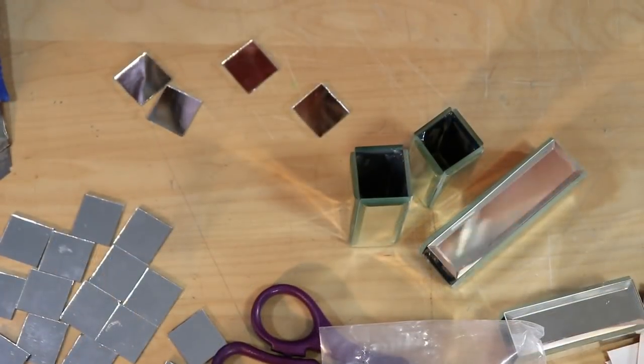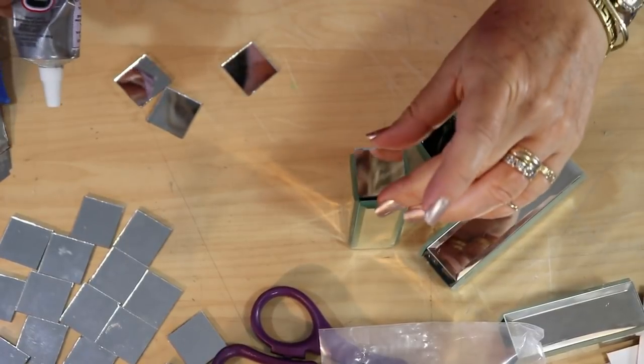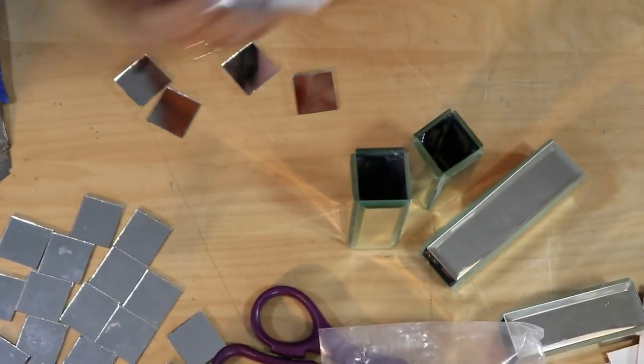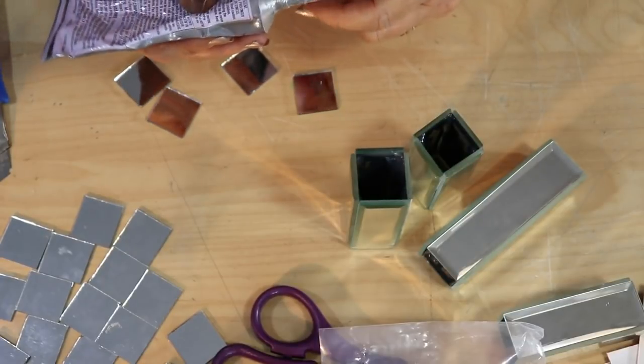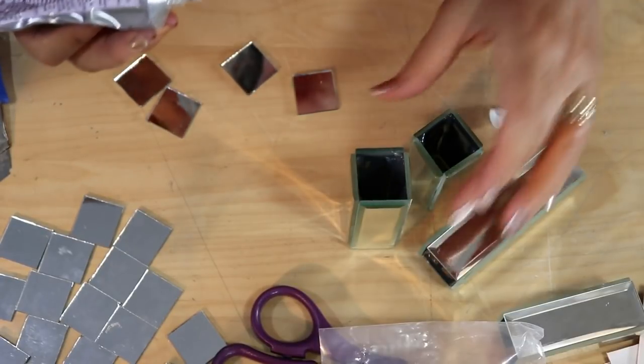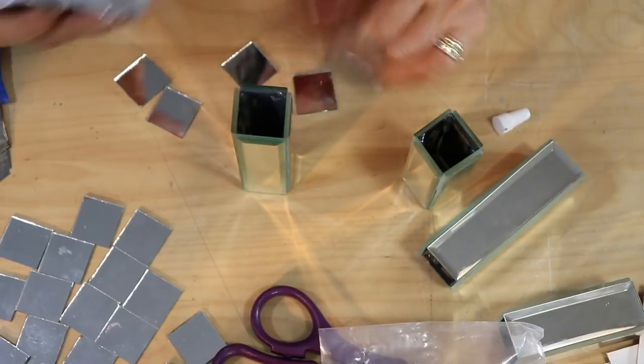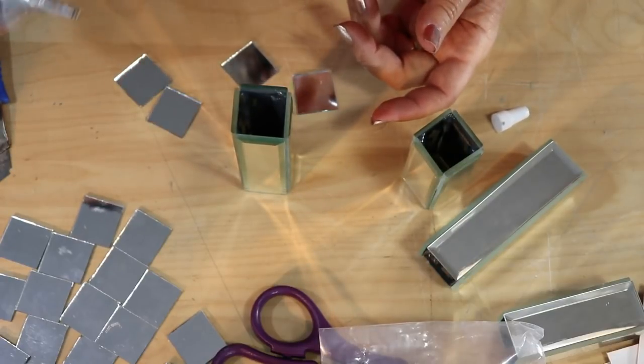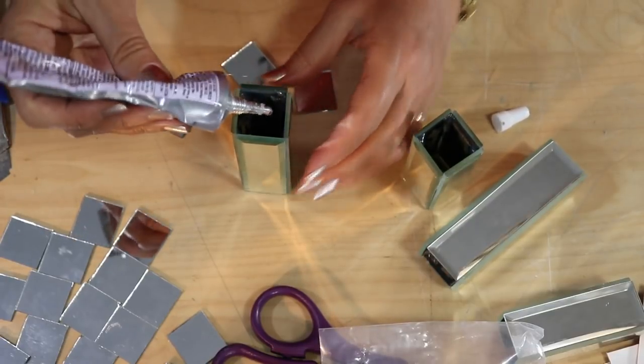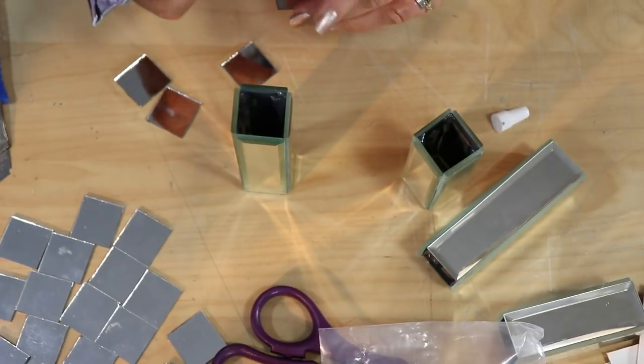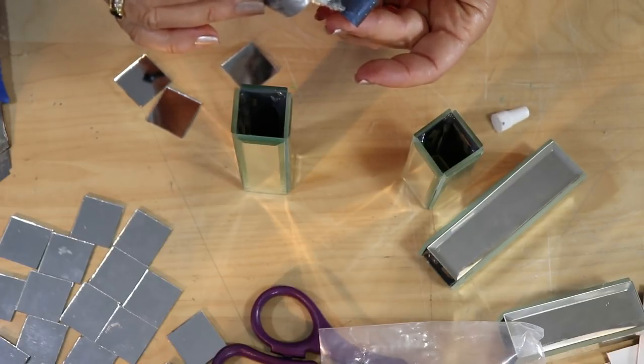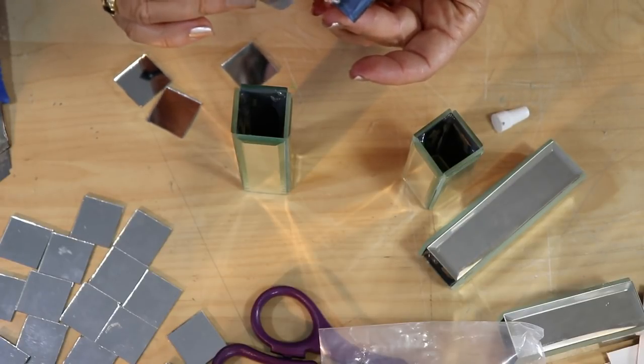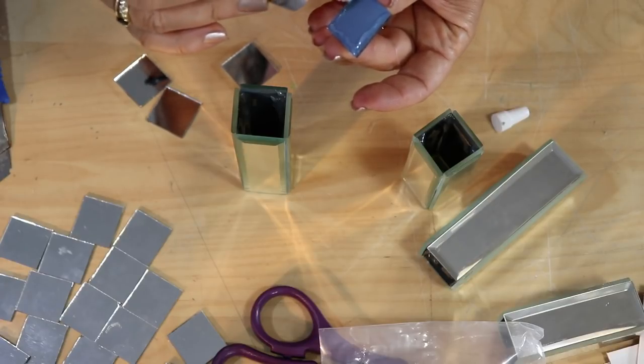To glue the mirror squares on as end caps, I'm going to be using the E6000 and letting that dry because I feel like I have a little more control with it. You can if you feel more comfortable using the glue gun, that's fine. I just feel like it's going to be easier for me to use my E6000.